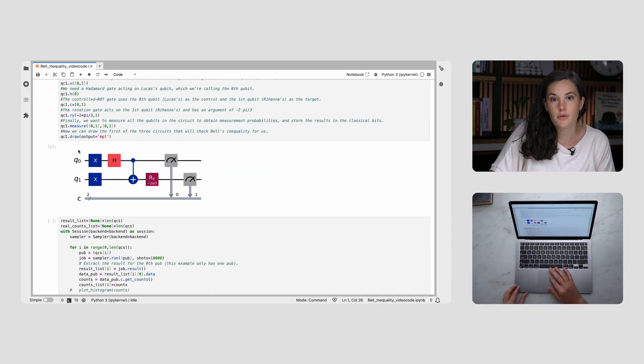We'll take two qubits, one to represent Lucas's particle, and one for Rihanna's, and entangle them with this quantum circuit. So the two qubits are represented by the two wires, Q0 and Q1, and this combination of X, Hadamard, and CNOT gates will make the same entangled state we had between Lucas and Rihanna's particles.